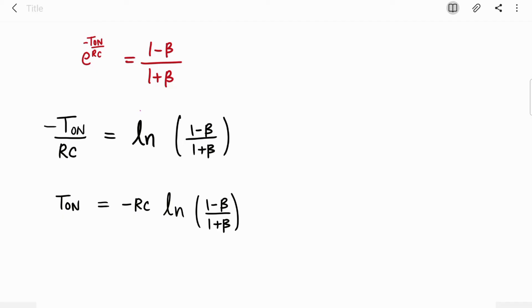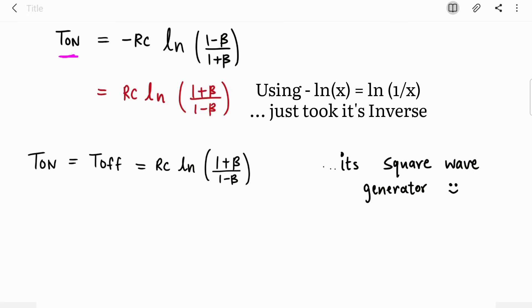Now just take log on both sides. ln is natural log. We know that log E is ln natural log. So this E will be removed and you will get minus T on upon RC ln in the bracket this whole term. Now I am sending this RC with this minus sign to right hand side, so it becomes minus RC ln and that bracket value term.